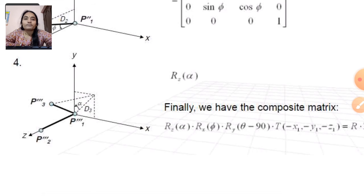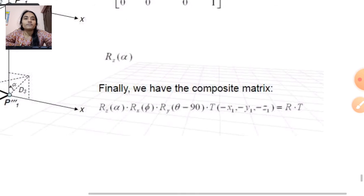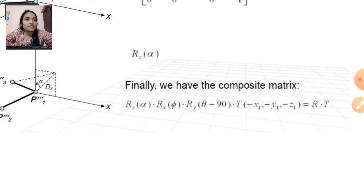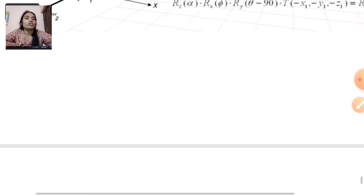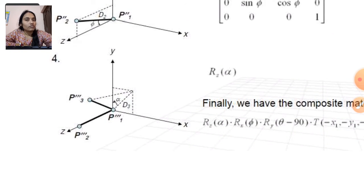Then last, the P1-P3 line also lies along the Z axis. Finally, the composite matrix equation is: rotation in Z axis, rotation in X axis, rotation in Y axis, into transformation in reverse form — that means R into T, rotation into transformation. When we complete this, we get the final result.